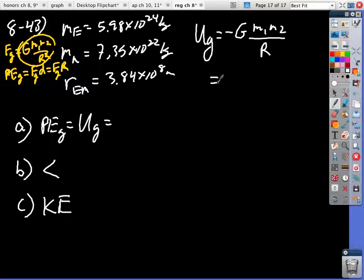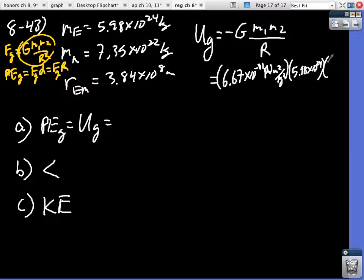Okay, so back to here. We're just going to plug in stuff now. We've got 6.67 times 10 to the minus 11, and it's newtons meters squared per kilogram squared. And then we're multiplying that by the mass of the Earth, which is 5.98 times 10 to the 24. Multiply that by the mass of the Moon, which is 7.35 times 10 to the 22. And then we're dividing all of that by 3.84 times 10 to the 8th meters.